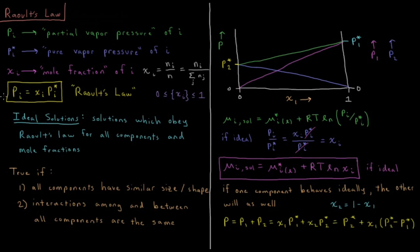Raoult's Law tells us that the vapor pressure of a substance in a solution equals its mole fraction times the vapor pressure of pure liquid I, and this is true if the solution is ideal. Ideal solutions are defined as solutions which obey Raoult's Law for all components at all mole fractions.